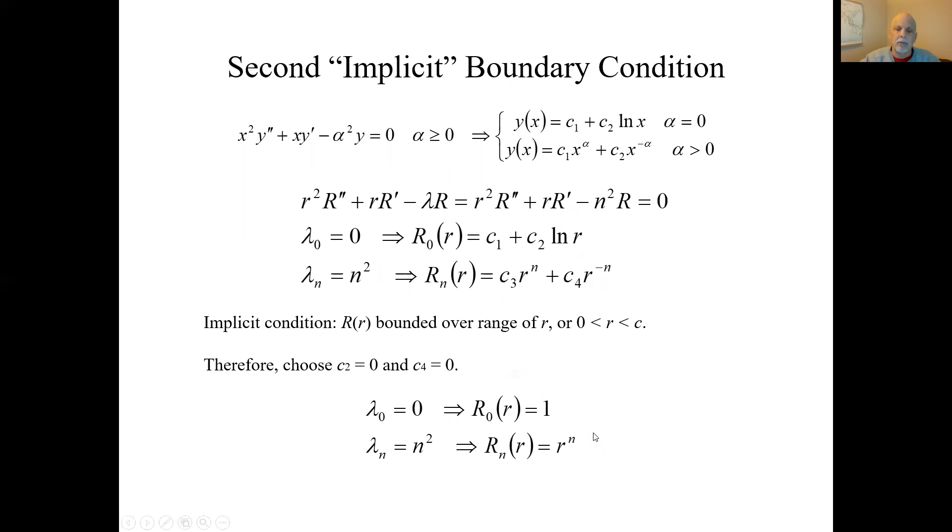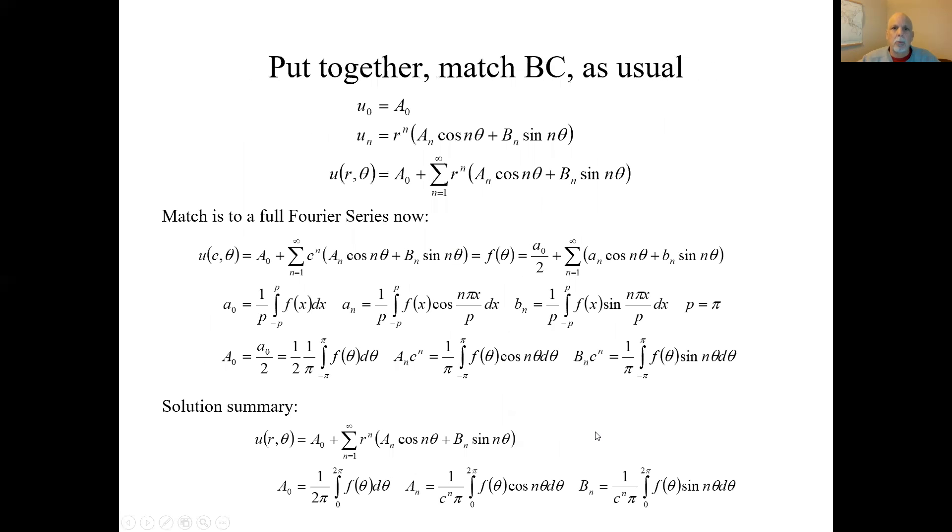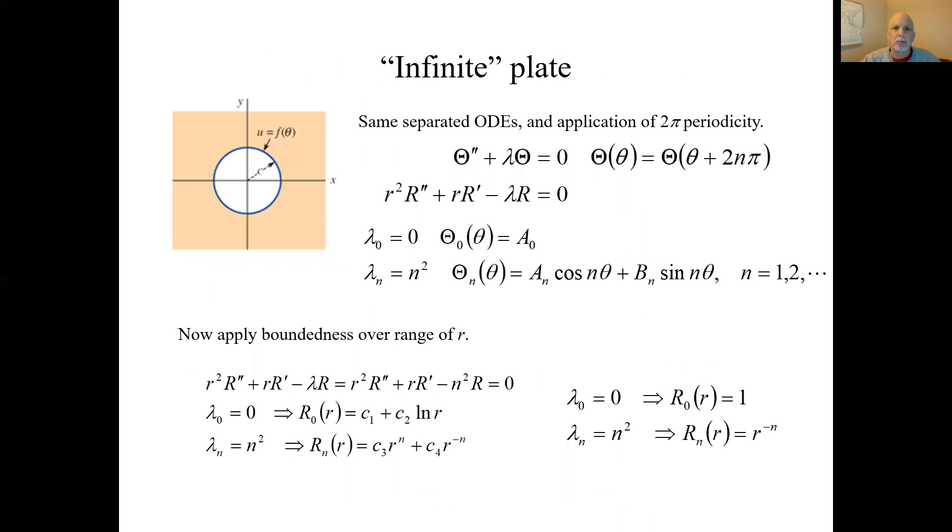We're left with these eigenfunctions. And then we put it together, set it equal to an expanded version of the explicit boundary condition using, in this case, the full Fourier series, trigonometric Fourier series. That's a review of the previous problem.